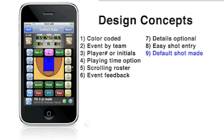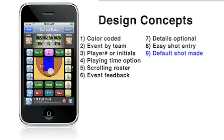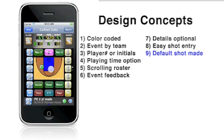You probably noticed that as we added shots for the home team they defaulted to missed. You have to touch the court afterward to change them to made shots. The reason for this is that missed shots occur way more often than made shots, and if you want the shooting percentage you have to track both. This seemed to be a more efficient way to do this.